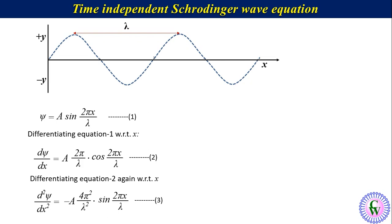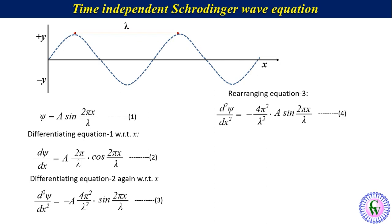We can rearrange equation 3 as d²ψ/dx² equals minus (4π²/λ²) times A sin(2πx/λ), equation number 4. From equation 1, we can see that A sin(2πx/λ) equals ψ. So replacing this term by ψ gives d²ψ/dx² equals minus (4π²/λ²)ψ, equation number 5.